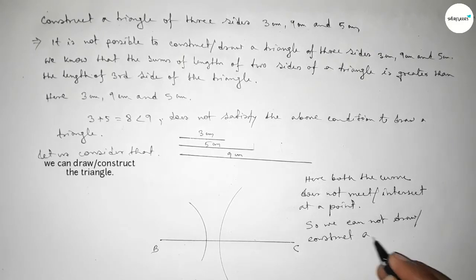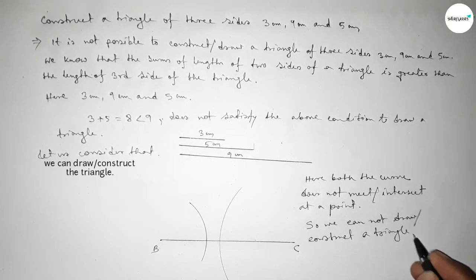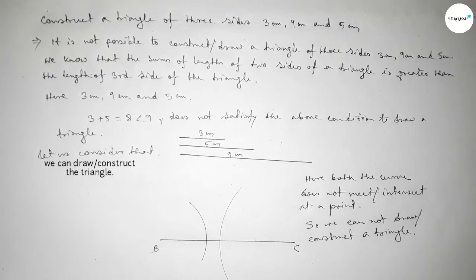So we cannot construct or draw a triangle with these three sides: 3 centimeter, 9 centimeter, and 5 centimeter. That's all, thanks for watching. If this video is helpful to you, please share it.